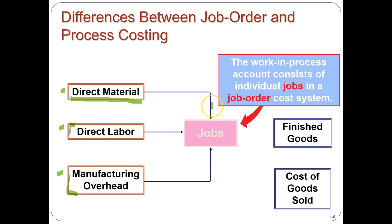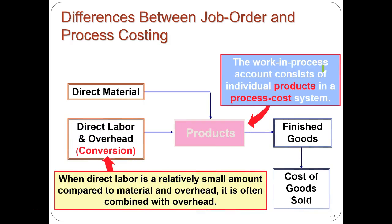In a job order cost system, the work in process account is backed up by individual job cost sheets. In a process cost system, the work in process account is backed up by the processes themselves. Also, in a highly automated process system, direct labor may be relatively small compared to materials and overhead, and in that case the two amounts are often combined.